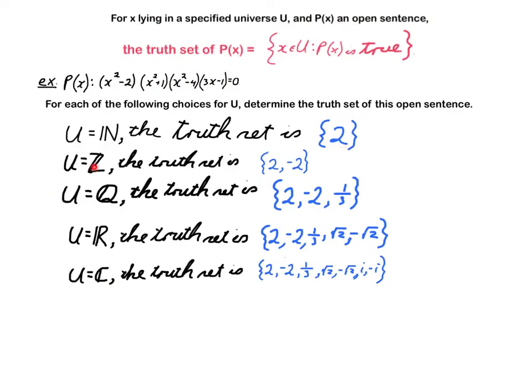If U is Z, then the only roots I mentioned that were in Z are 2 and minus 2. If U is Q, we have to, in addition, throw in 1/3, which came from this factor here.